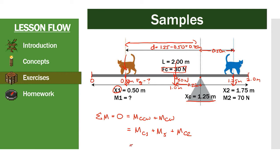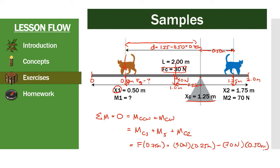Now we can calculate the missing quantity — the weight of cat one. Cat one's force F1 is unknown, positioned 0.75 meters from the center of support. The seesaw exerts 30 newtons at 0.25 meters. Cat two exerts 70 newtons (clockwise, negative) at 0.50 meters from the center of support.